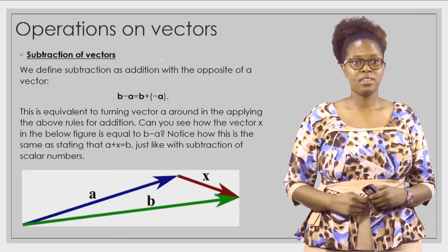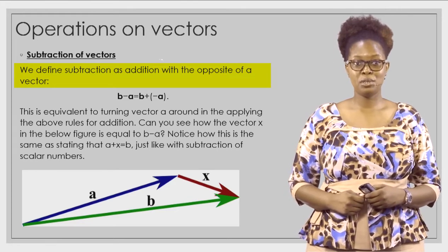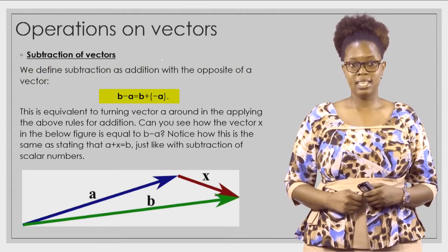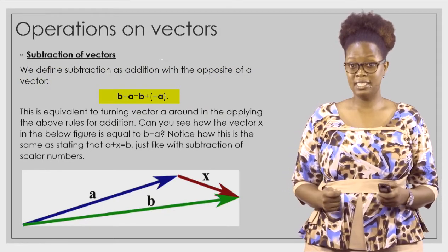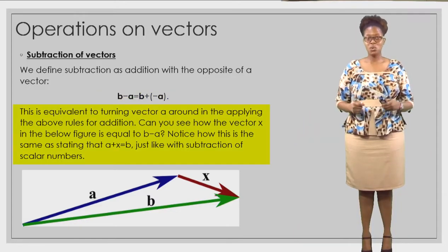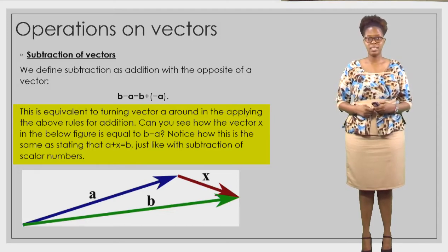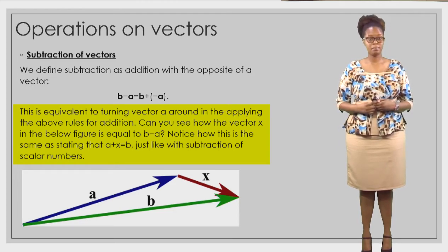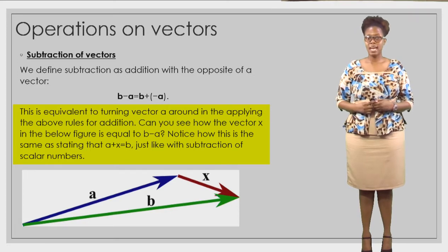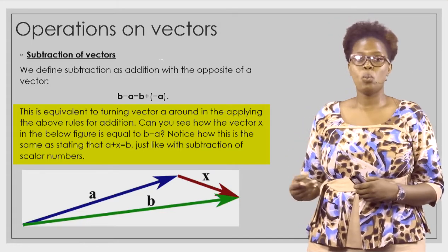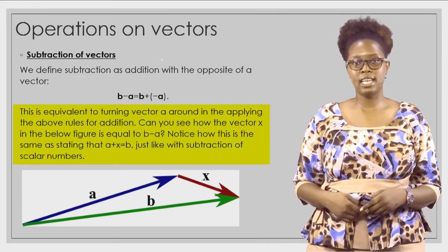Subtraction of vectors: we define subtraction as addition with the opposite of a vector. So b subtract a is equal to b plus negative a. This is equivalent to turning vector a around and applying the rules for addition. Notice how this is the same as stating that a plus x equals b, just like with subtraction of scalar numbers.